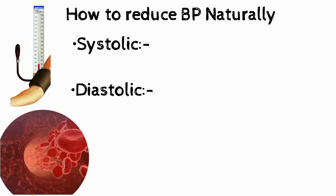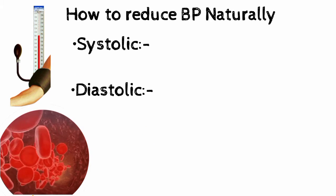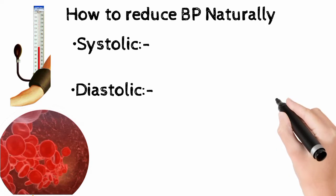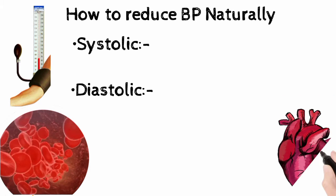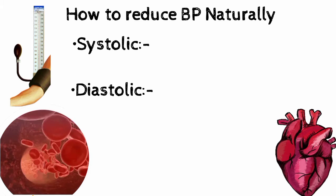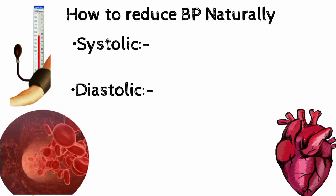Systolic blood pressure is the maximum pressure exerted by the blood on blood vessels during contraction of the heart and diastolic is the minimum blood pressure during two heartbeats.